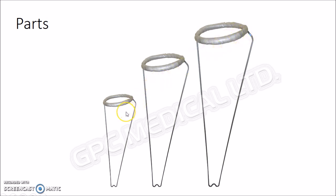Thomas splint is available in different sizes as shown in this figure. The ring size is found by adding 2 inches to the thigh circumference at the highest point of the patient's groin. The length of the Thomas splint is decided by measuring from the highest point on the medial side of the groin to the heel, plus 6 inches.